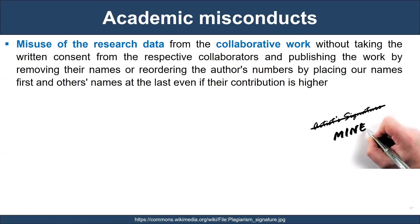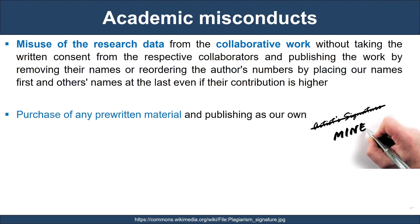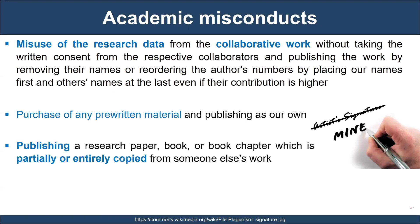There are certain academic misconducts we need to be aware of. Considering collaborative research, when we misuse research data without taking written consent from the respective collaborators and publishing the work by removing their names or reordering the author numbers by placing our name first and others' names later, even if their contribution is substantial. Purchase of any pre-written material and publishing it as our own. Publishing a research paper, book, or book chapter which is partially or entirely copied from someone else's work.